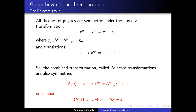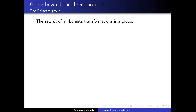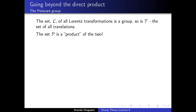As we have been mentioning, the set of all Lorentz transformations forms a group — the Lorentz group. So do the set of all translations. In a sense, the Poincaré group in which you do Lorentz transformations and translations is really a product of these two groups — but this product is in quotes because it is not a direct product, as you will soon see.